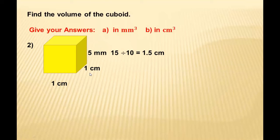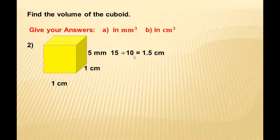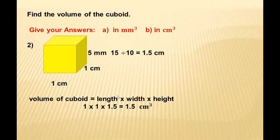We can convert millimeters to centimeters by dividing by 10. So 15 mm equals 1.5 cm. Then applying the formula: 1 × 1 × 1.5 = 1.5 cm³.